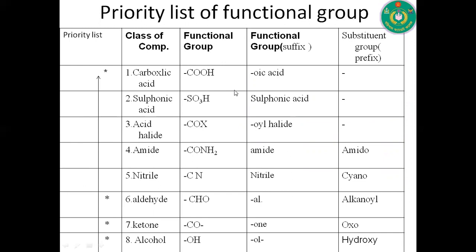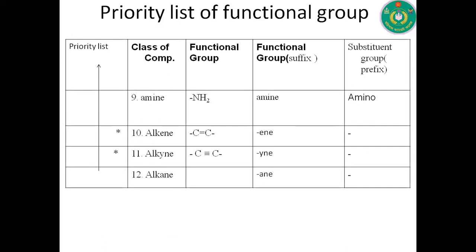If different types of functional groups are present on a compound, you must know the priority order of those functional groups. For example, if a carboxyl group and an alcoholic group are both present, the naming is based on the carboxylic group — for example, 4-hydroxybutanoic acid — because the acidic group has higher priority. The compound is named based on the most active functional group according to the priority list.